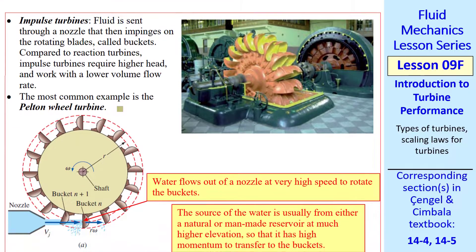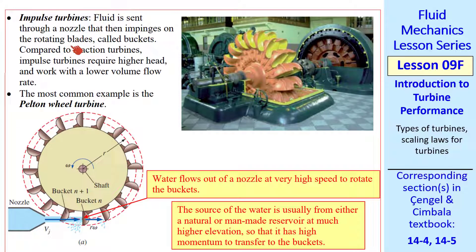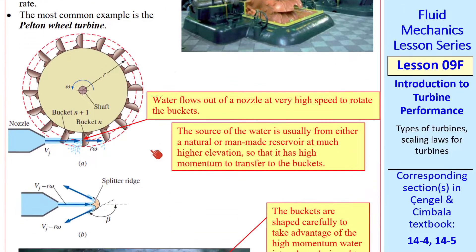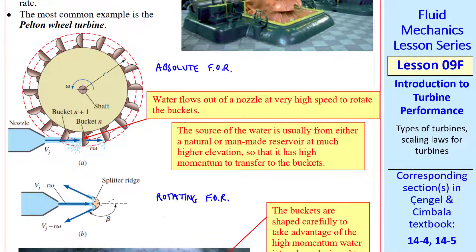Let's talk about impulse turbines first. In an impulse turbine, fluid is sent through a nozzle that impinges on the rotating buckets. Impulse turbines require high head but work with a small volume flow rate. The most common is a Pelton wheel. The water jet comes from the left and turns the wheel; the shaft is then attached to a generator. I have two schematics: the top one is in the absolute frame of reference, and the bottom one is in the rotating frame of reference rotating with the turbine. We have very high head water coming from an upper reservoir, sent through a nozzle so a jet impinges on the buckets, giving it momentum that turns the bucket.